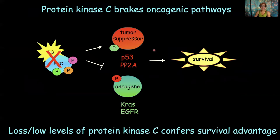Summarizing this part of the talk: protein kinase C is acting as the brakes to oncogenic signaling. We think one of the mechanisms it does so is by supporting tumor suppressor activity and opposing oncogene activity. Two examples are KRAS, which is phosphorylated and inactivated by PKC, and the EGF receptor, which gets phosphorylated and internalized by PKC. So PKC opposes oncogenic pathways and promotes tumor-suppressive pathways.